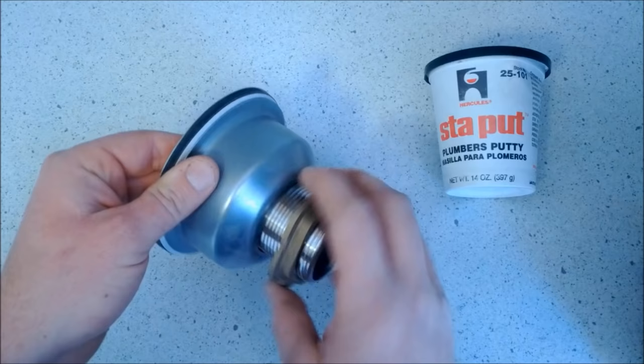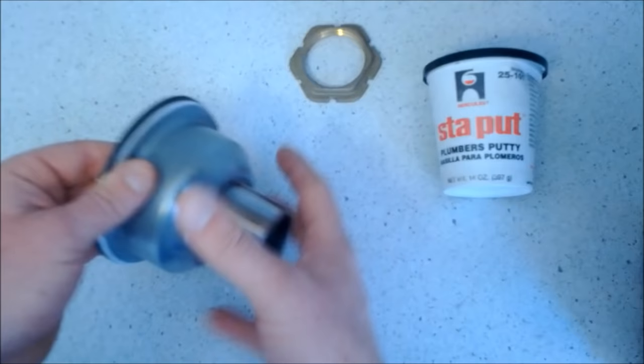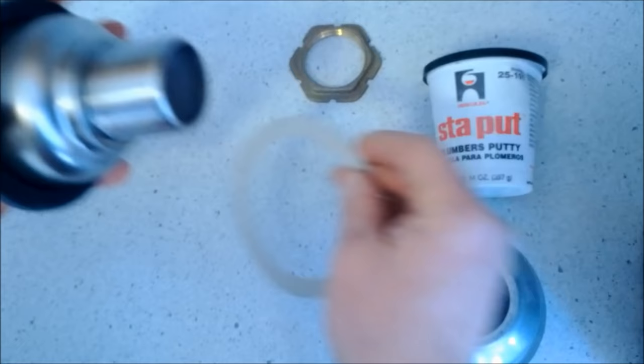Next, we'll remove the brass nut off the new kitchen strainer. That way we can separate the pieces out. You'll first remove the metal lower half of the basket. Then you'll have a paper ring, and then you'll have the rubber gasket part. So we'll separate all that out and set it aside.